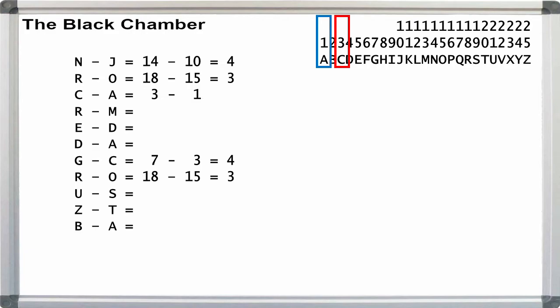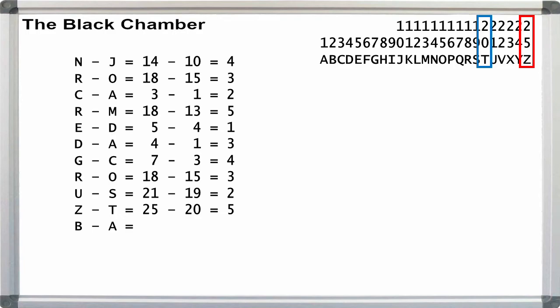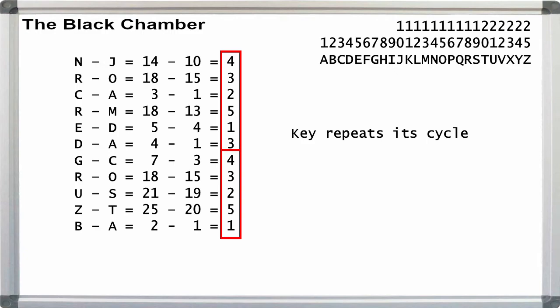Continuing, C minus A is 3 minus 1 is 2. R minus M is 18 minus 13 is 5. E minus D is 5 minus 4 is 1. D minus A is 4 minus 1 is 3. U minus S is 21 minus 19 is 2. Z minus T is 25 minus 20 is 5. B minus A is 2 minus 1 is 1. Because the probable words are 11 letters total, and almost twice the period length, we can expect the key to repeat itself, which it does. This is just further proof that we're on the right track.